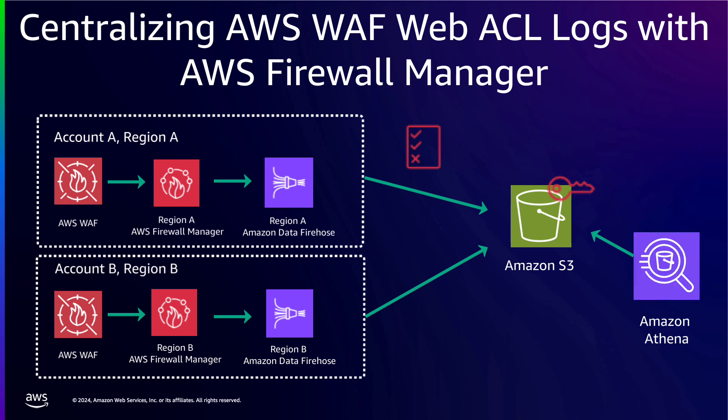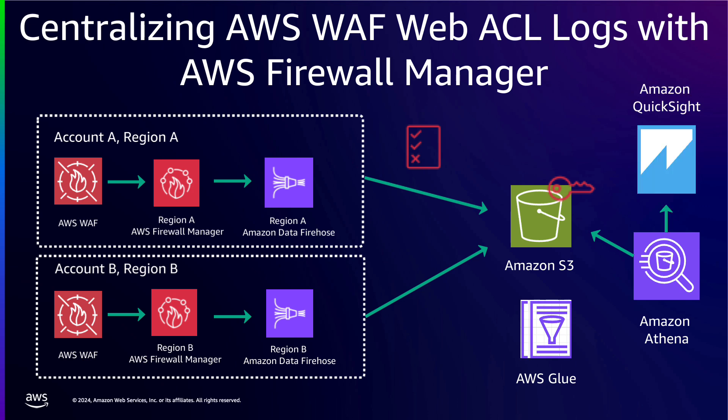Best practice includes encrypting this bucket. Customers also need to ensure that they have the right IAM and Amazon S3 bucket policies to enable centralized logging. Customers can then use Amazon Athena to query these logs in the centralized S3 bucket. For performance and cost reasons, customers are encouraged to partition their AWS WAF ACL logs for queries, which normally involves additional manual steps such as setting up AWS Glue resources, including Glue data catalog tables for schema management. Once this is done, customers can then use tools like Amazon QuickSight to visualize this data.